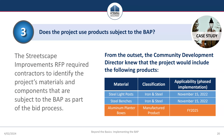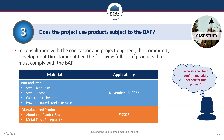Looking at the Streetscape project, the CD director ensured that the RFP required contractors to identify materials and components subject to the BAP as part of the bid process. She identified initial products: steel light posts, steel benches, and aluminum planter boxes. After bids were received and reviewed, additional products were identified by the bidding contractors, including a cast iron fire hydrant, a powder-coated steel bike rack, and metal trash receptacles to be installed along the sidewalk. As a result, the total list of products includes four iron and steel products and two manufactured products.